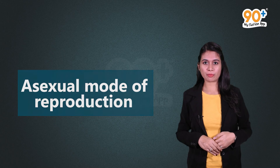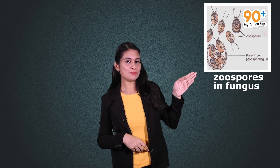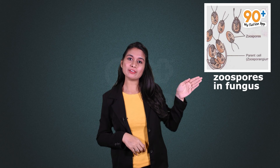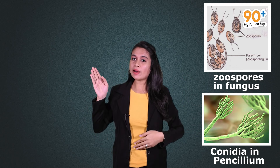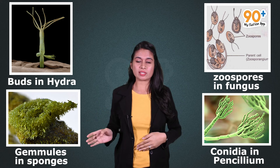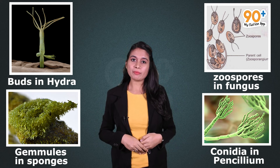Animals that undergo asexual reproduction are morphologically and genetically similar because the mode of reproduction is via mitosis — cell division. The asexual reproductive structures in different organisms are: zoospores in fungi, which are microscopic motile structures; conidia in Penicillium; buds in hydra; and gemmules in sponges. These reproductive structures help the organism to reproduce more efficiently.